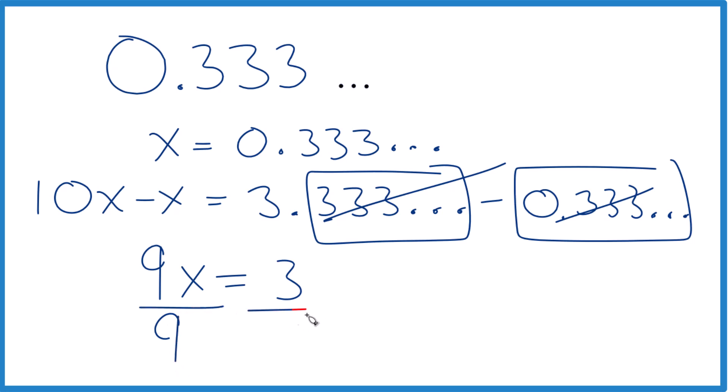Divide both sides by 9 and you get 3/9. 3 goes into itself once, and it goes into 9 3 times. So we can simplify that down to 1/3.